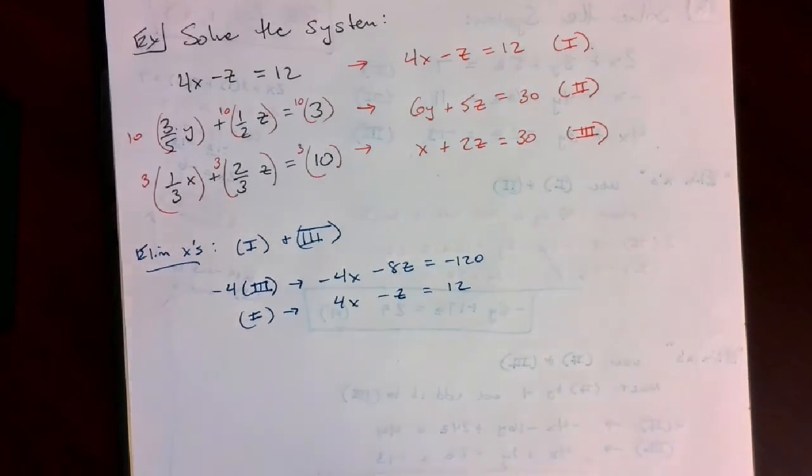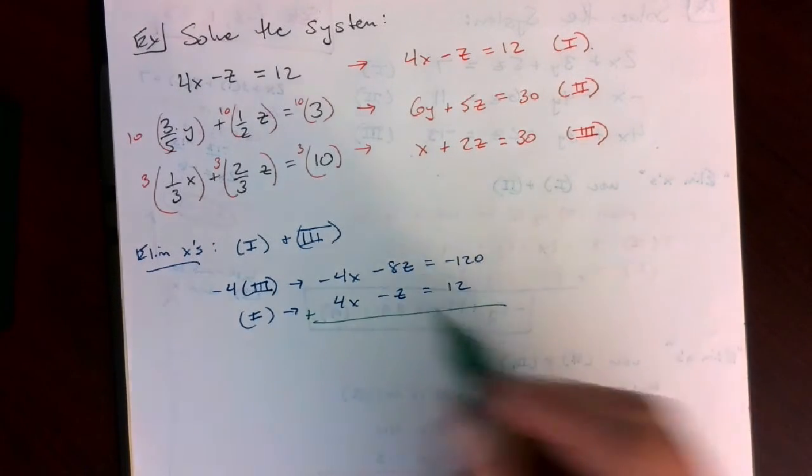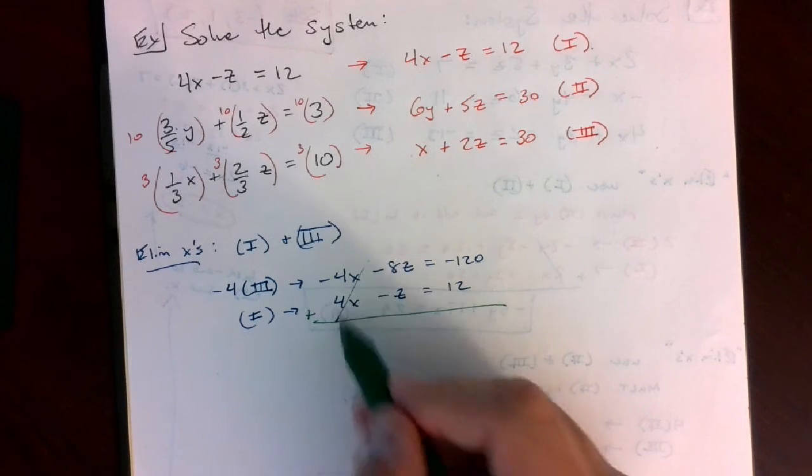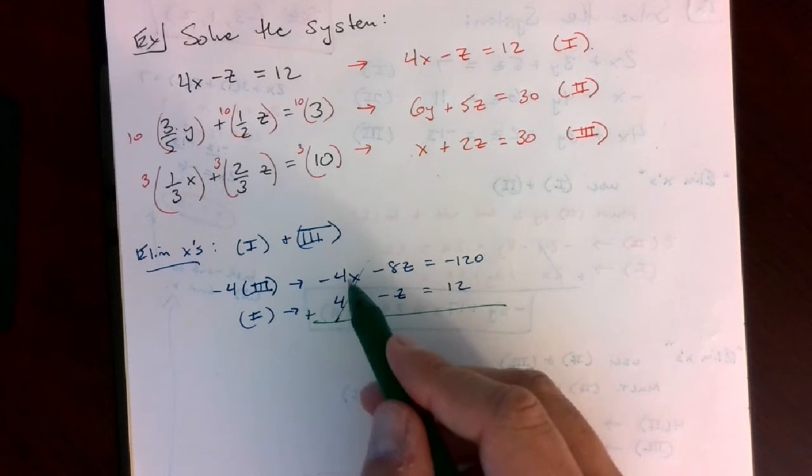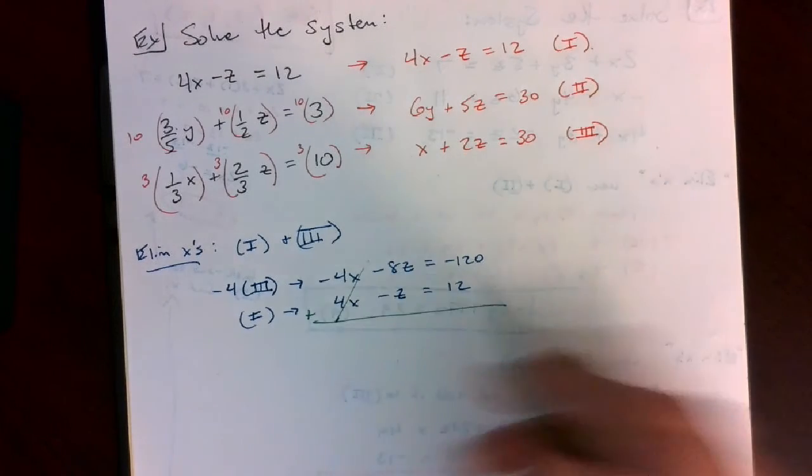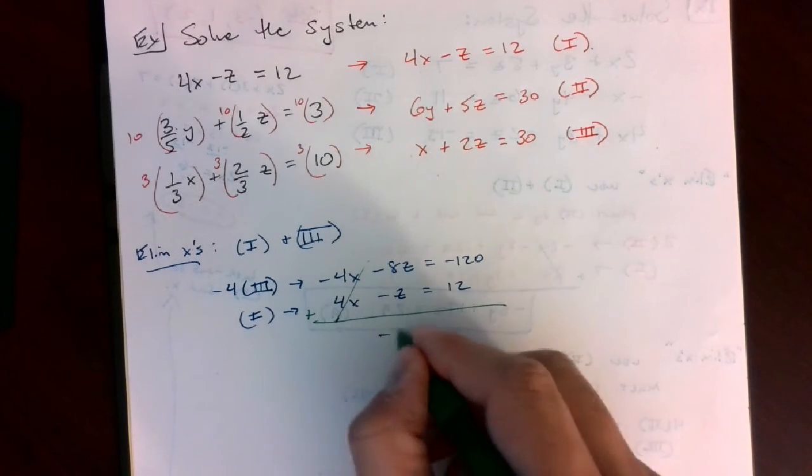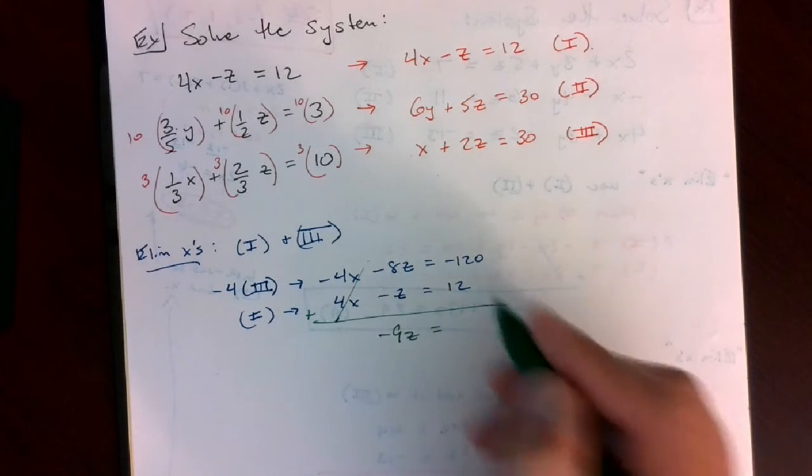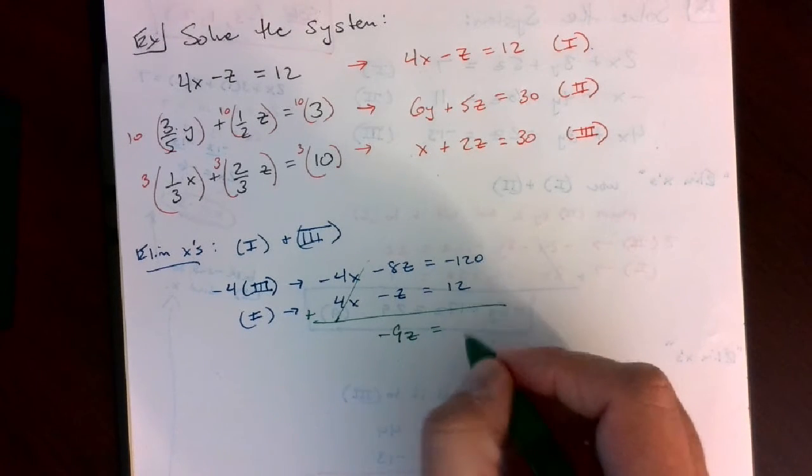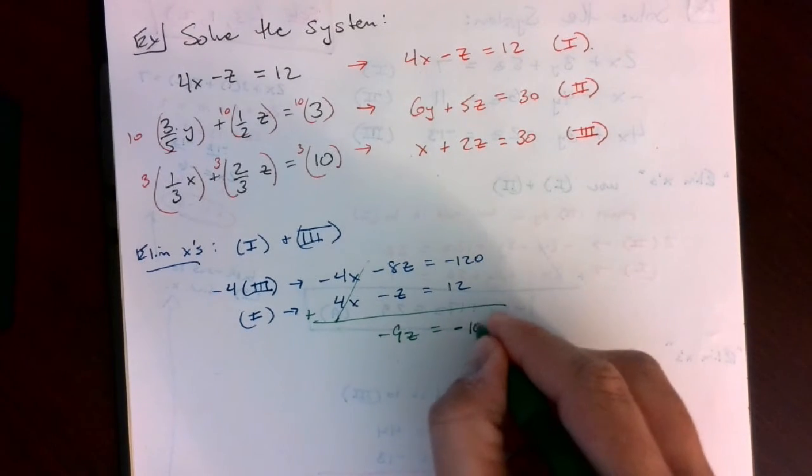When I eliminate by adding these together, negative 4x plus 4x cancel out to 0. Negative 8z minus z equals negative 9z, and it equals negative 120 plus 12, which is negative 108.